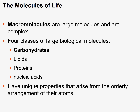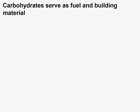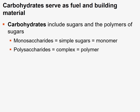Each of these four classes of large biological macromolecules have unique properties that arise from the orderly arrangement of their atoms. Their atoms are going to be parts of the backbone or skeleton of the molecule and parts of the functional groups that are added. Carbohydrates serve as fuel and building material for living systems. Carbohydrates include sugars and the polymers of sugars. A monomer is a single unit, and when the single units come together by dehydration synthesis, they create polymers.